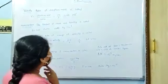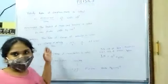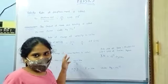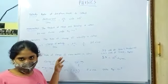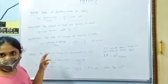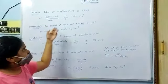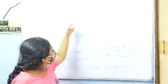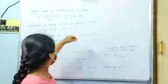Hi friends, physics. Velocity: the rate of displacement is called velocity. V is equal to displacement by time, units meter per second.